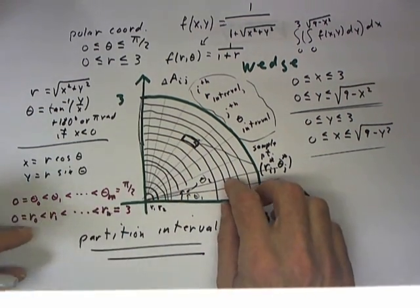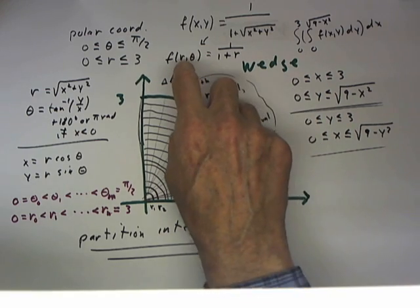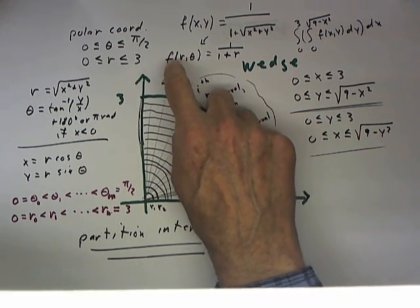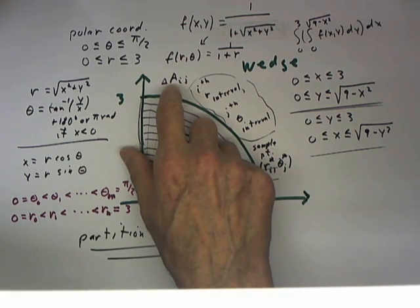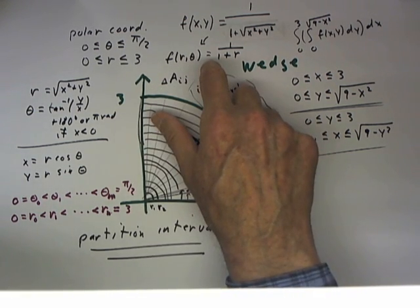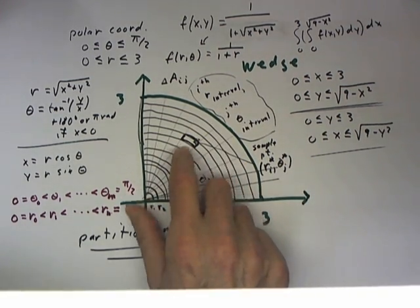To construct our integral, we need to represent the product of the function f(r,θ) and the area. We multiply the value of the function times the area to get our contribution to the integral.